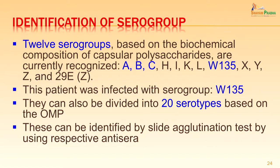After this, identification of serogroups can be done by serology. Based on biochemical composition of the capsular polysaccharide, Neisseria has been divided into 12 groups: A, B, C, H, I, K, L, W135, X, Y, Z and 29E. The more common groups are A, B, C and W135. This patient was infected with serogroup W135. The serogroups can be further subdivided into 20 serotypes based on the outer membrane protein, identified by slide agglutination test using respective antisera.